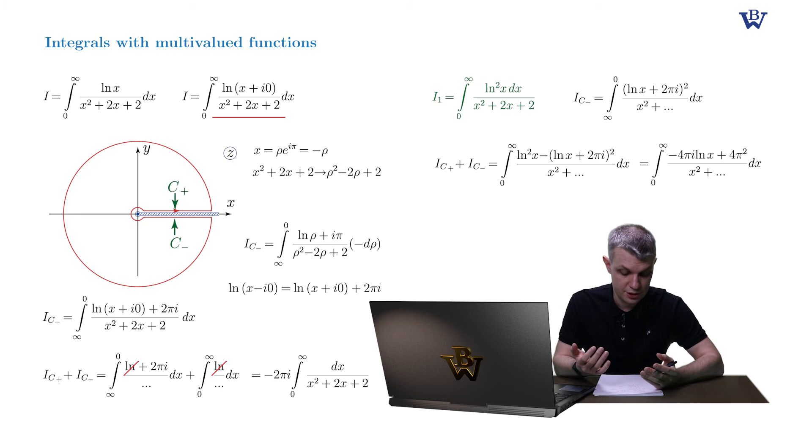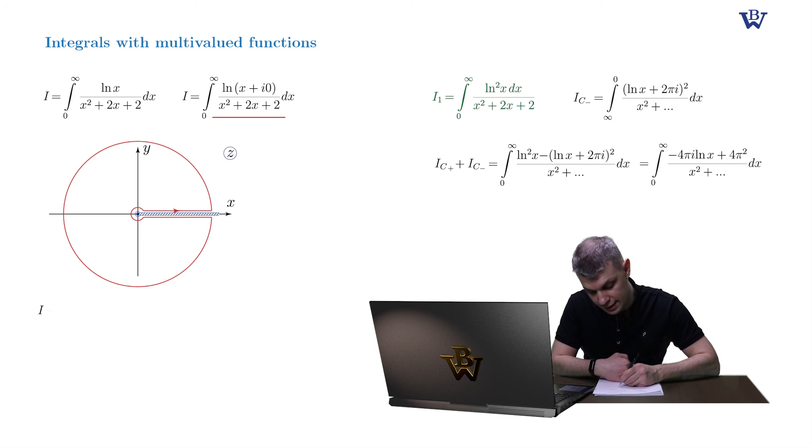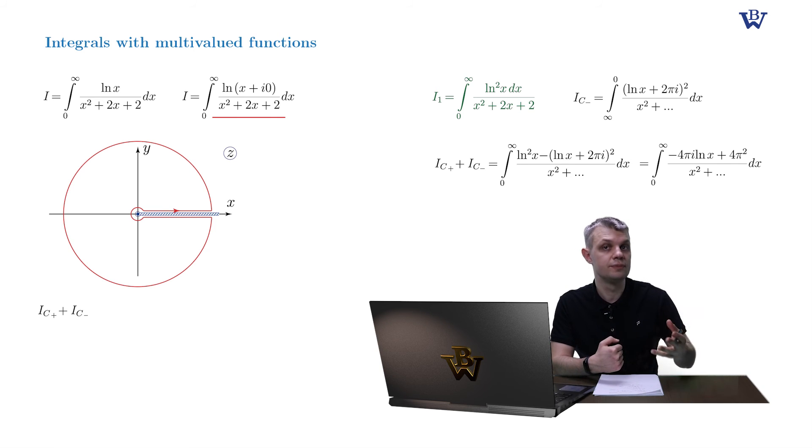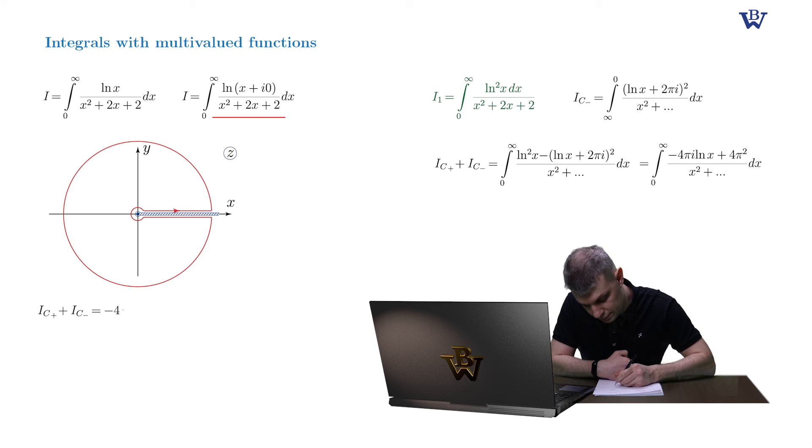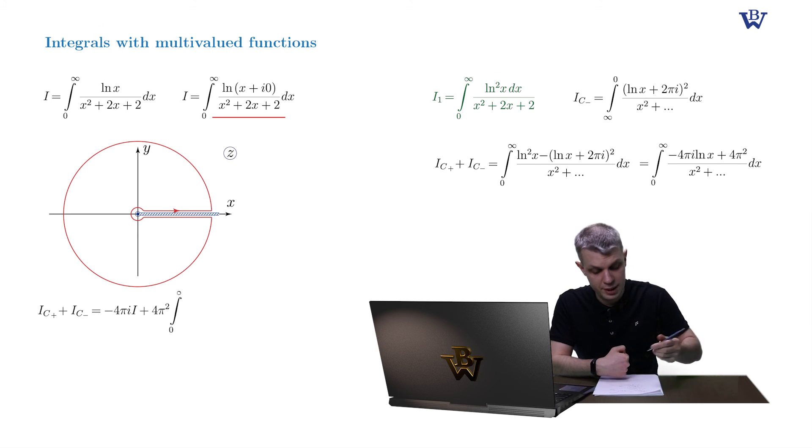So once we split this integral into two parts, we'll see that the first part is nothing but our original integral up to negative 4 pi i pre-factor. And of course, as always, there is a remainder term.